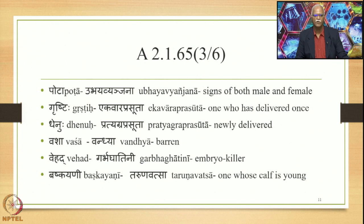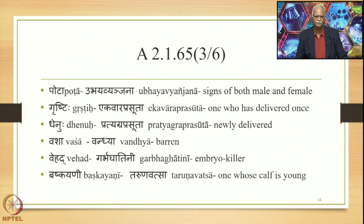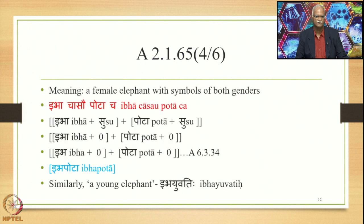Now let us see what these peculiar words stand for. Pota, also explained as Ubhayavyanjana, means one which has signs of both male as well as female. Grushti is Ekavaraprasuta — one who has delivered once. Dhenu is Pratyagraprasuta — newly delivered. Vasha is Vandhya — barren. Vehat means Garbhaghatini — embryo killer. Vashkayani means Tarunavatsa — one whose calf is young. The other words are quite well known.